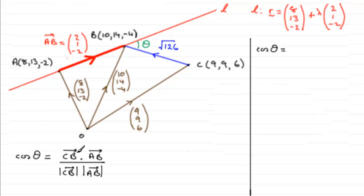C to B as a vector, have we got it? We worked it out in the previous part as the difference between the vector B and the vector C. And we found that that was 10, 14, minus 4, subtract 9, 9, 6. And that gave us the vector 1, 5, minus 10.